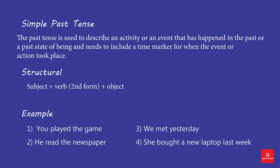Simple Past Tense. The Past Tense is used to describe an activity or event that has happened in the past, or a past state of being, and needs to include a time marker for when the event or action took place. Structure: Subject + Verb (second form) + Object. Examples: You played the game. He read the newspaper. We met yesterday. She bought a new laptop last week.